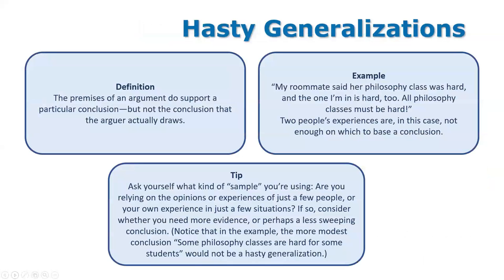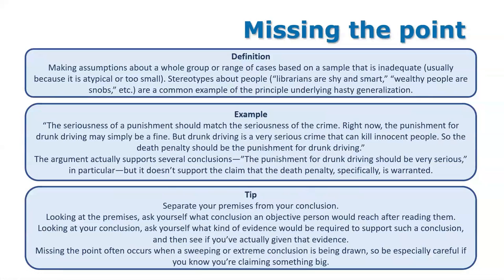Here's an example of hasty generalization: 'My roommate said her philosophy class was hard, and the one I'm in is hard too, so all philosophy classes must be hard.' That's a hasty generalization. Ask yourself: what kind of sample are you using? Are you relying on someone's opinion or experience? For missing the point: 'The punishment for drunk driving is serious, so the death penalty should be the punishment.' The argument supports stricter punishment but does not support that specific extreme conclusion.